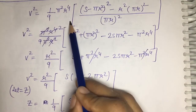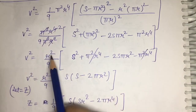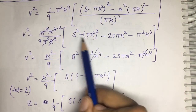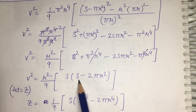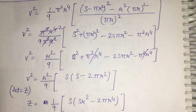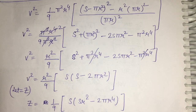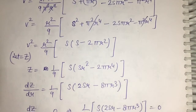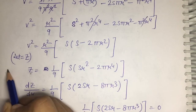Expanding and simplifying V², we let Z = V². After expanding (A − B)² and cancelling terms, Z = (r²/9)·S(S − 2πr²). To maximize V, we maximize Z. Let Z = (1/9)(Sr² − 2πr⁴), since S is constant. We differentiate Z with respect to r.